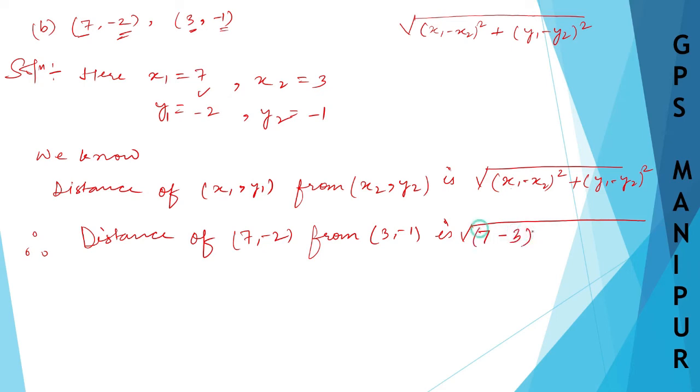7 minus 3 whole square plus y1, y1 is -2, and y2 is -1. So (-2) minus (-1) whole square,